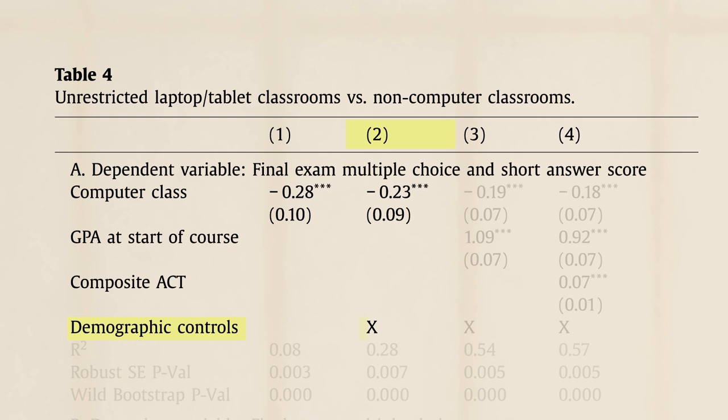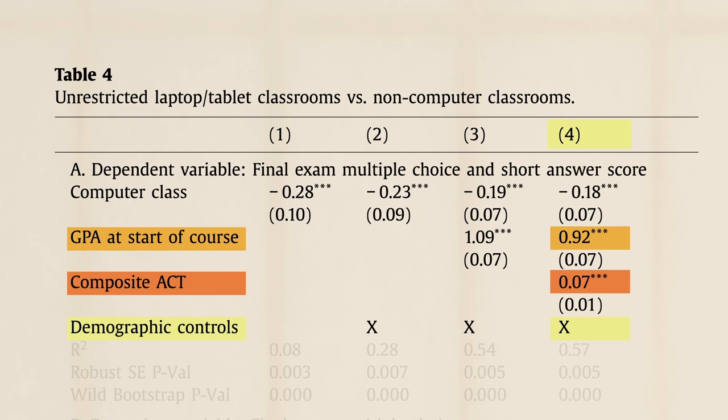In our last lesson, Master Joshua explained that we use standard deviation units because these units are easily compared across studies. Column two reports results from a model that adds demographic controls. Here we're comparing test scores, but holding constant factors such as age and sex. Column three reports results from a model that adds GPA to the list of covariates. Column four adds ACT scores.